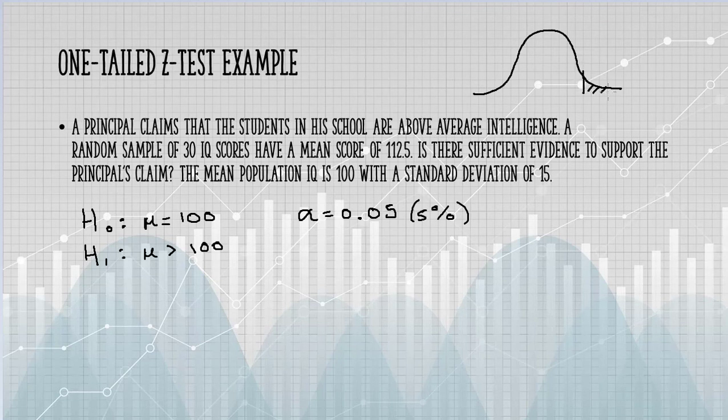That alpha level is this tail area here, which means the rest of the normal curve is going to be 95%. That's because the total area under the curve is 100%.